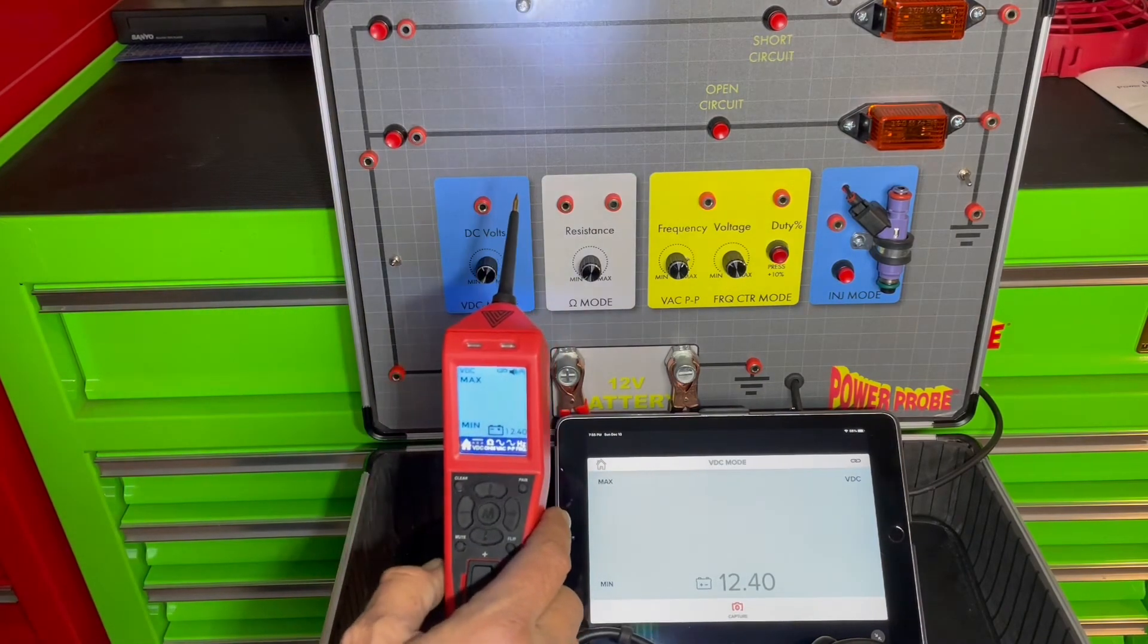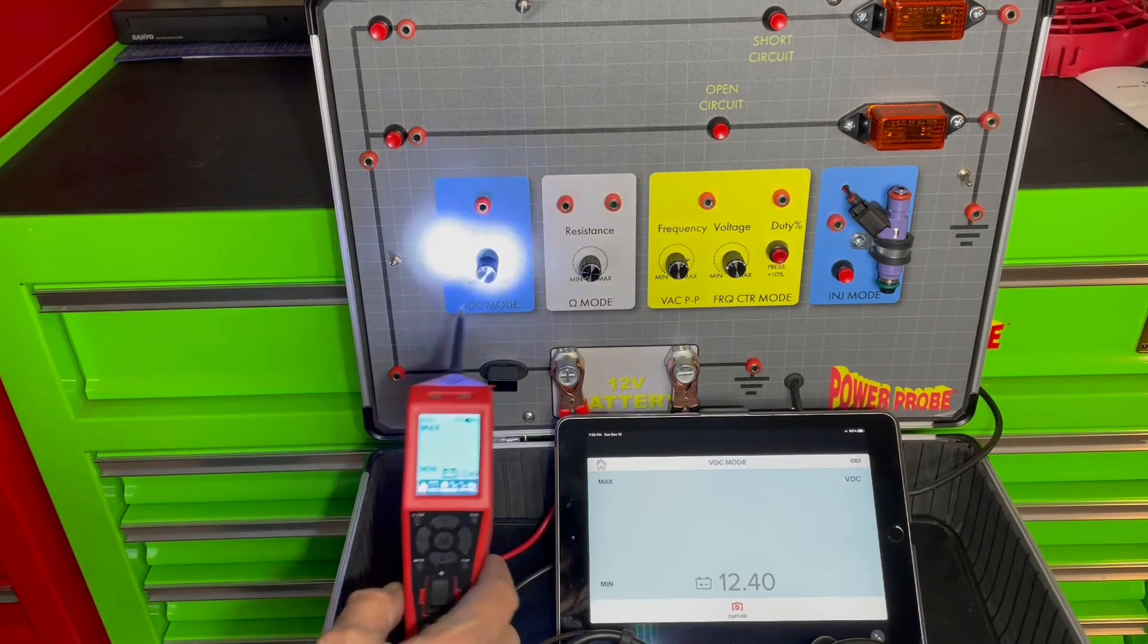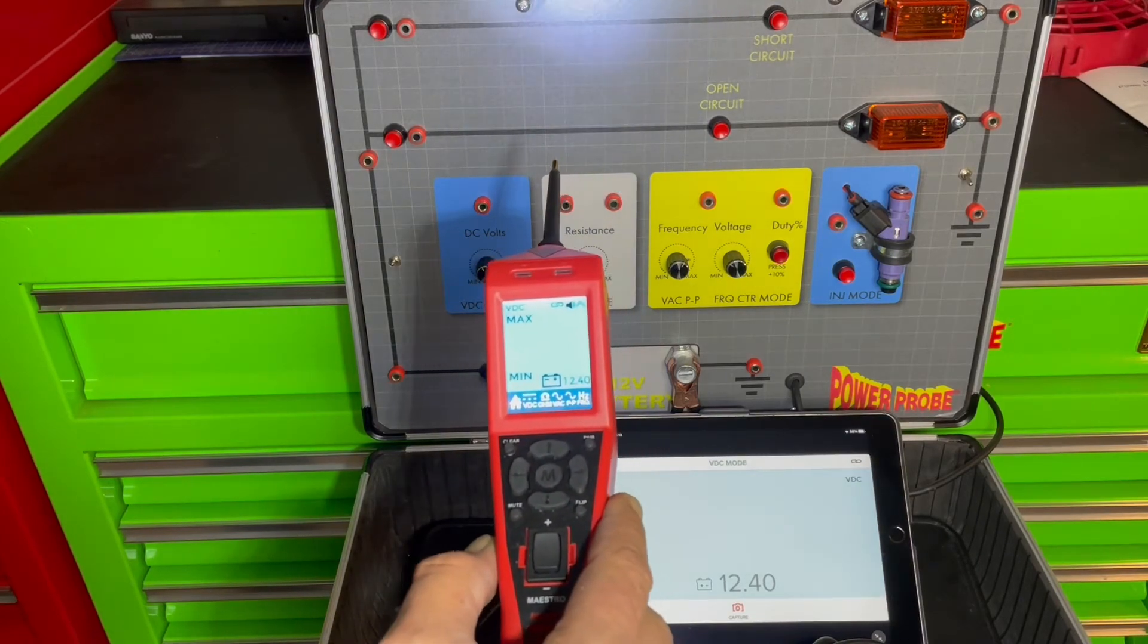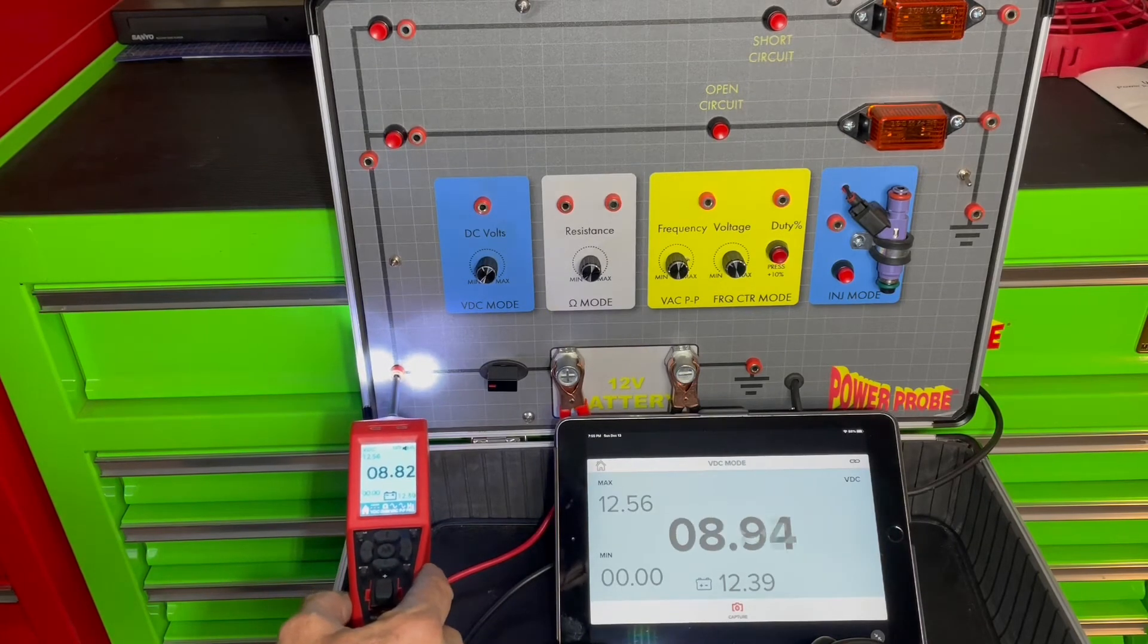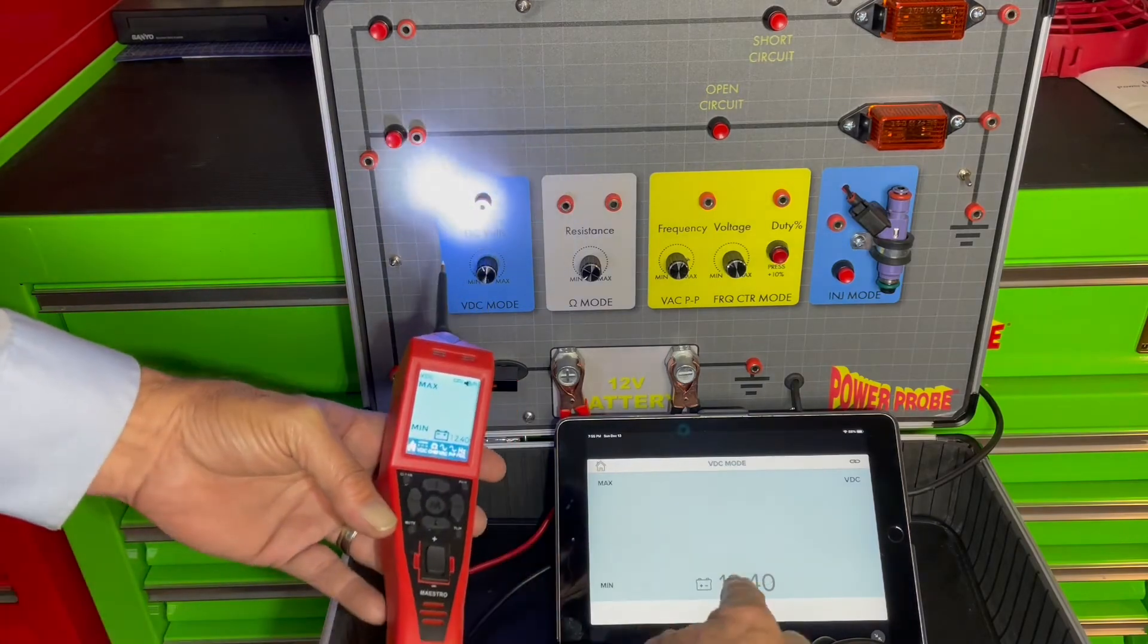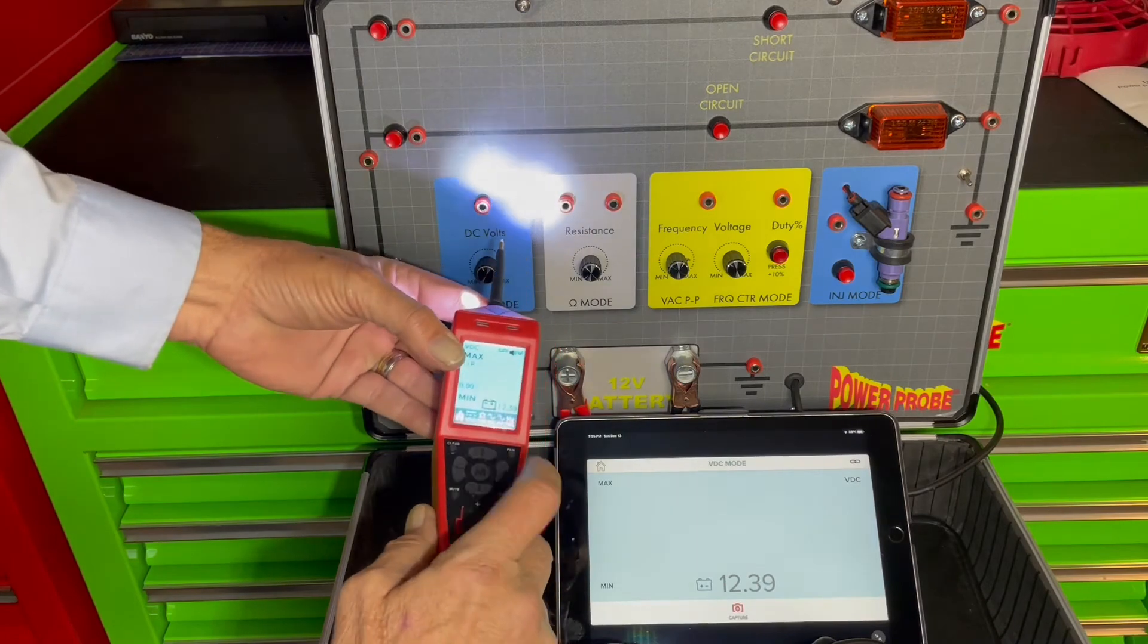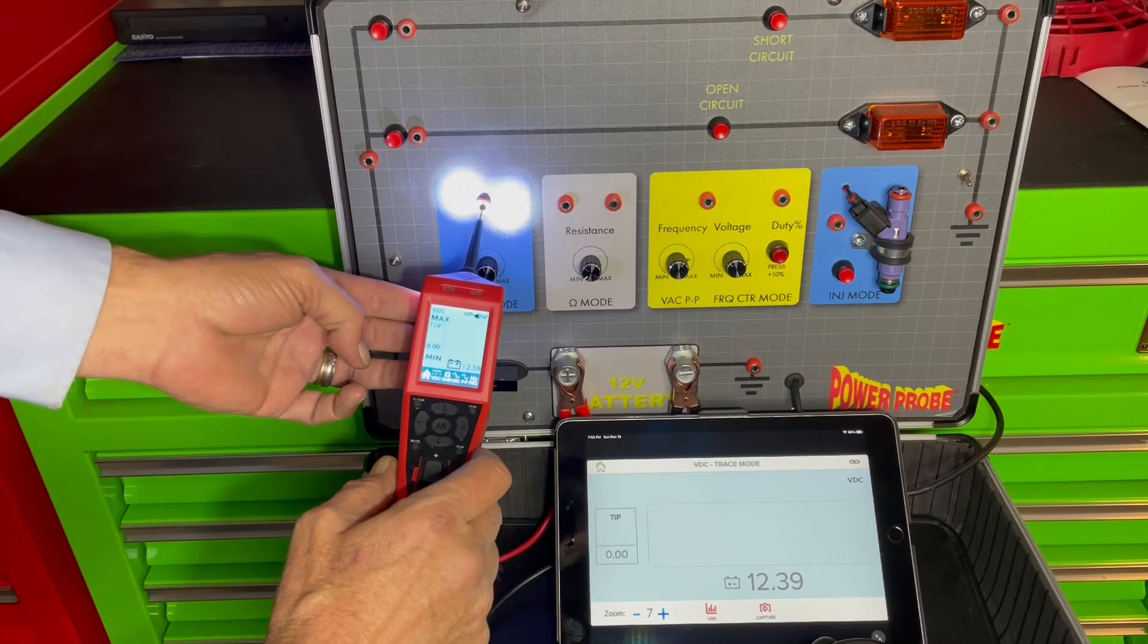So let's show you how that will display. Here's your DC volt meter mode. You have battery voltage displayed on the bottom just like you do on the tool screen. You have min and max on the side just like on the tool screen. Tool still operates the same way. Now let's switch this to trace mode and we'll go to this point with the adjustable voltage.